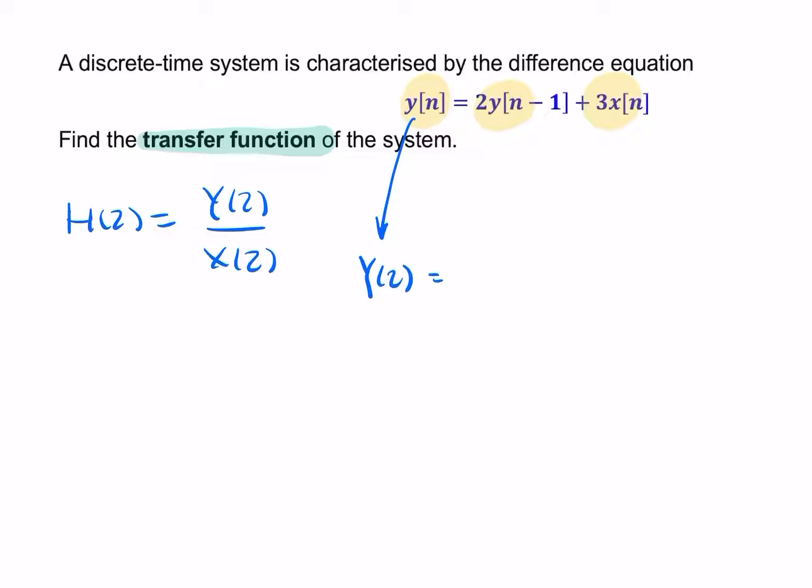The z transform of 2y of n minus 1 is 2y of z times z to the minus 1. Remember, that's what our delay operator does. That delay gives me that z to the minus 1 term. And then the z transform of x to the power n is simply x to the power z.